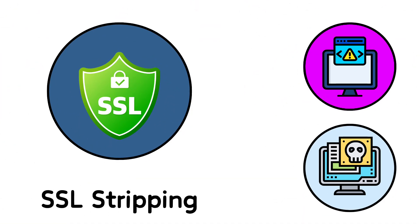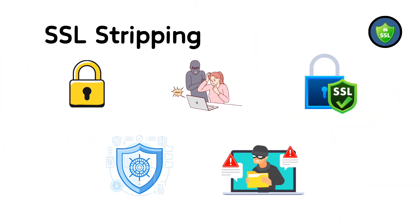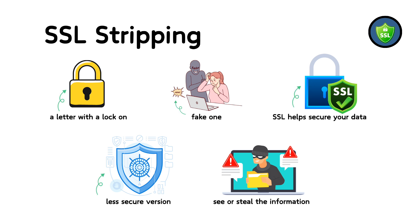4. SSL Stripping. SSL stripping is like sending a letter with a lock on it, but someone changes the lock to a fake one before it gets to the person you're sending it to. Normally, SSL helps secure your data by encrypting it. However, in SSL stripping, a hacker forces a connection to use a less secure version, or no security at all, allowing them to see or steal the information you thought was protected.